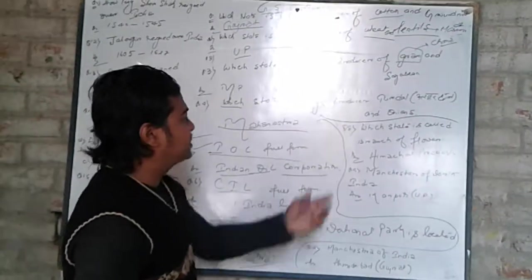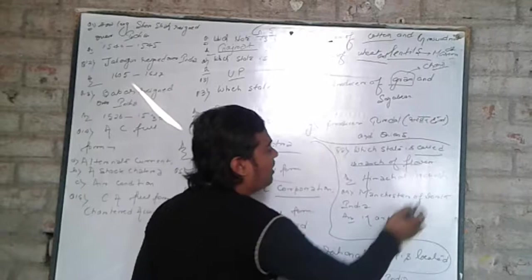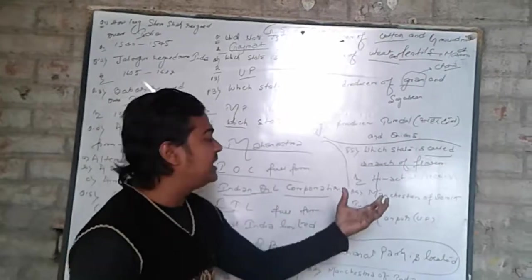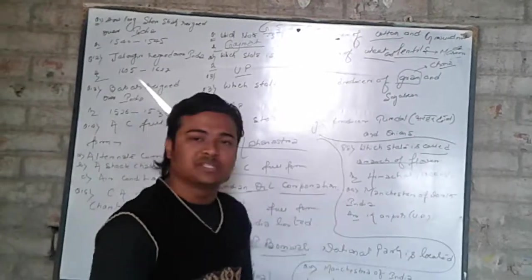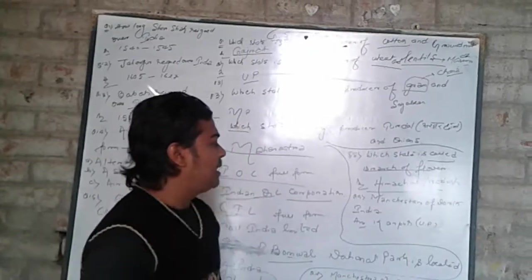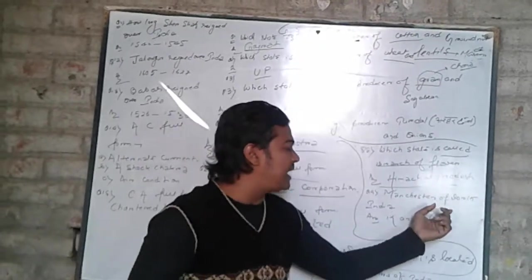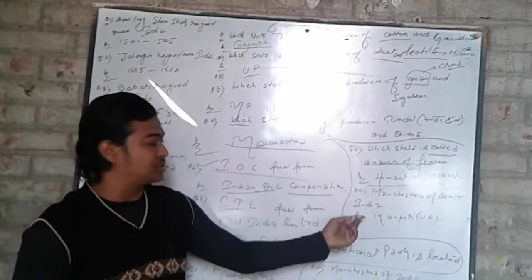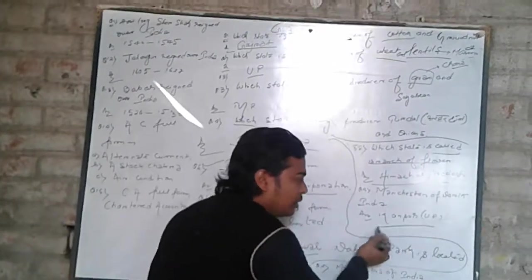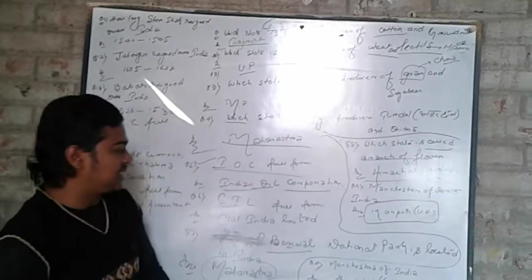Next question: Which state is called the 'Branch of Flowers' (phoolon ki daaliyan wala raj)? That is Himachal Pradesh. Manchester of North India — who is called the Manchester of North India? That is Kanpur. Okay friends, next question.